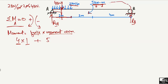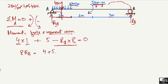The next load creating a moment about point A is R_B, acting in the anti-clockwise direction, so it is taken as negative. The moment arm is the distance from point B to point A, which is 8 meters. Setting the summation of moments at A equal to zero: 4(1) + 5 − R_B(8) = 0.